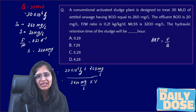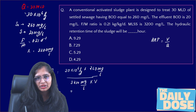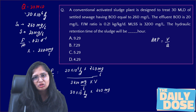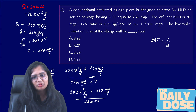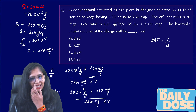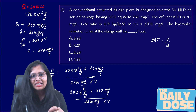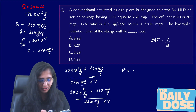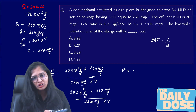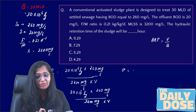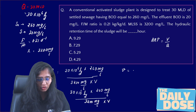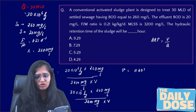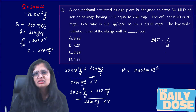The F/M ratio is 0.21, so: 30 × 10⁶ L/day × 260 mg/L divided by (3200 mg/L × Volume) equals 0.21. The mg/L units cancel out, leaving volume in litres. Converting to cubic metres by dividing by 1000, the volume comes out to 11,607.14 m³.